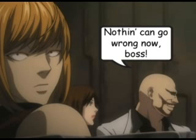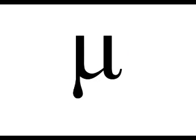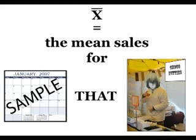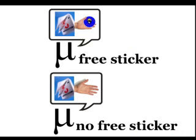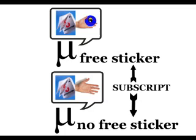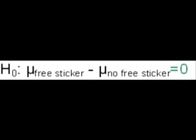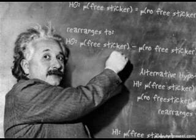Helen thinks the sales could go up or down as a result of offering a free sticker. Written in mathematical terminology, we use mu, a Greek letter, to represent the population mean. These are the mean sales for all days that choco-nutties are ever sold. These are different from the sample means, which are the values we calculate from our data. The subscript, saying either free sticker or no sticker, indicates whether we are talking about the population mean for days when a sticker is offered or when it is not. So we have H-nought: mu(free sticker) equals mu(no sticker), which rearranges to H-nought: mu(free sticker) minus mu(no sticker) equals zero. And the alternative hypothesis, H-1: mu(free sticker) doesn't equal mu(no sticker), which rearranges to H-1: mu(free sticker) minus mu(no sticker) is not equal to zero. That's the mathematical way to write the hypothesis.